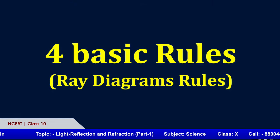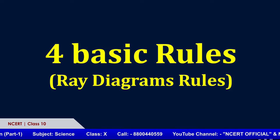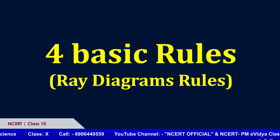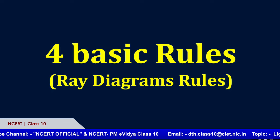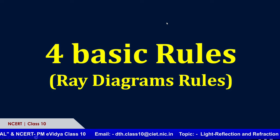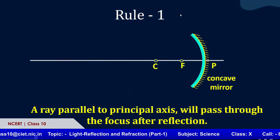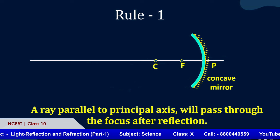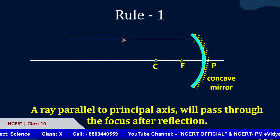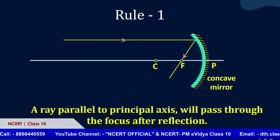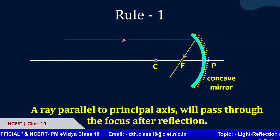Our main objective is to learn the relationship between images and objects in mirrors, which we relate using ray diagrams. To draw ray diagrams, we need four basic rules. Rule number one: any ray parallel to the principal axis will pass through the focus after reflection. A ray of light coming from infinite distance — a parallel ray coming from infinity — will pass through the focus. So while drawing a ray diagram, if a ray is coming parallel to the principal axis, it should pass through the focus.